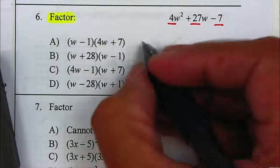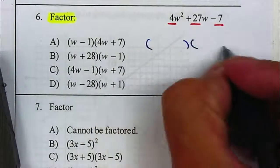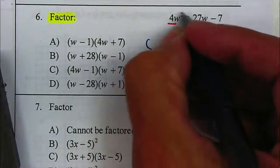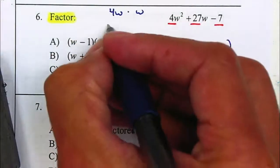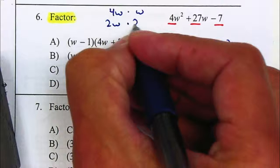So in this case, we're just going to use the double parenthesis to factor this trinomial. Factors of 4W squared can be 4W multiplied by W or 2W multiplied by 2W.